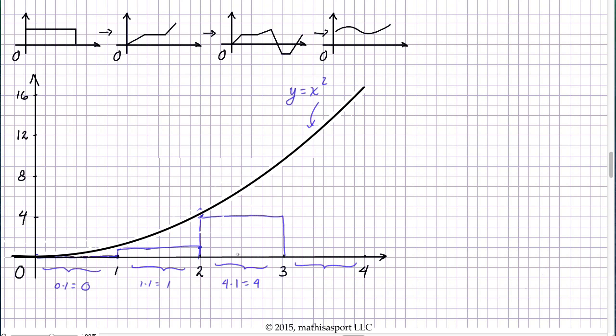And so our next rectangle has an area of a height of 4 times a width of 1, total area of 4. And finally, our last rectangle, again, sticking to the convention of making the height of the entire rectangle the height that we have right at the leftmost edge. In this case, the leftmost edge is at 3. So our height is 9, and our area is 9 times 1 equals 9.